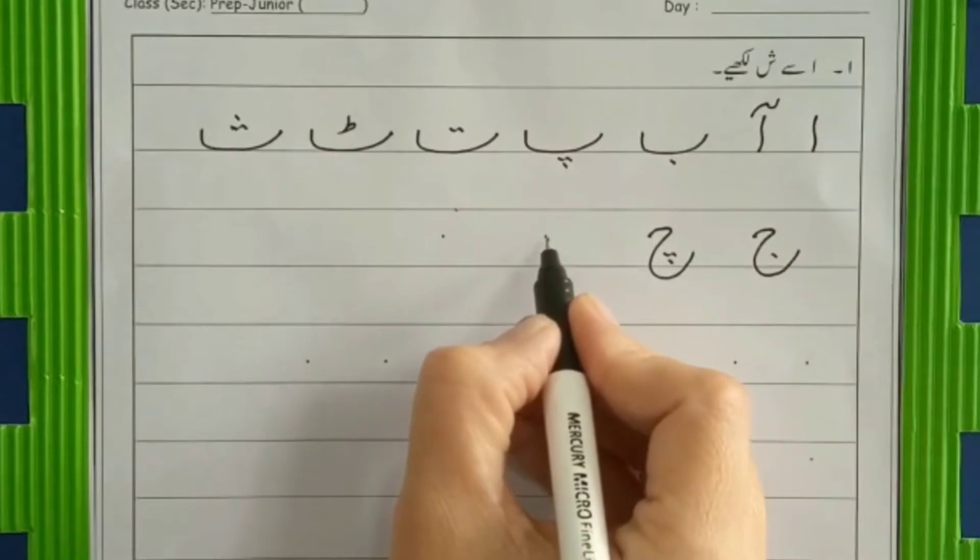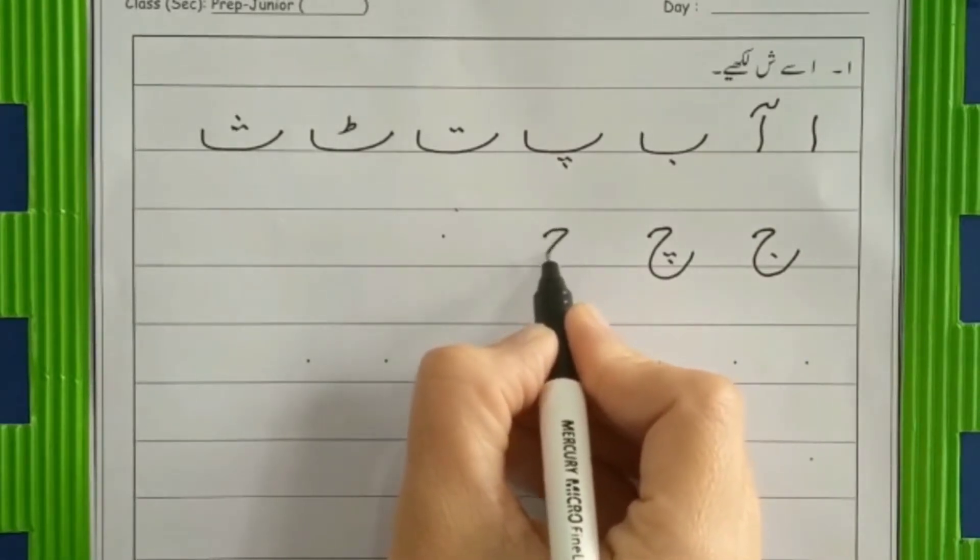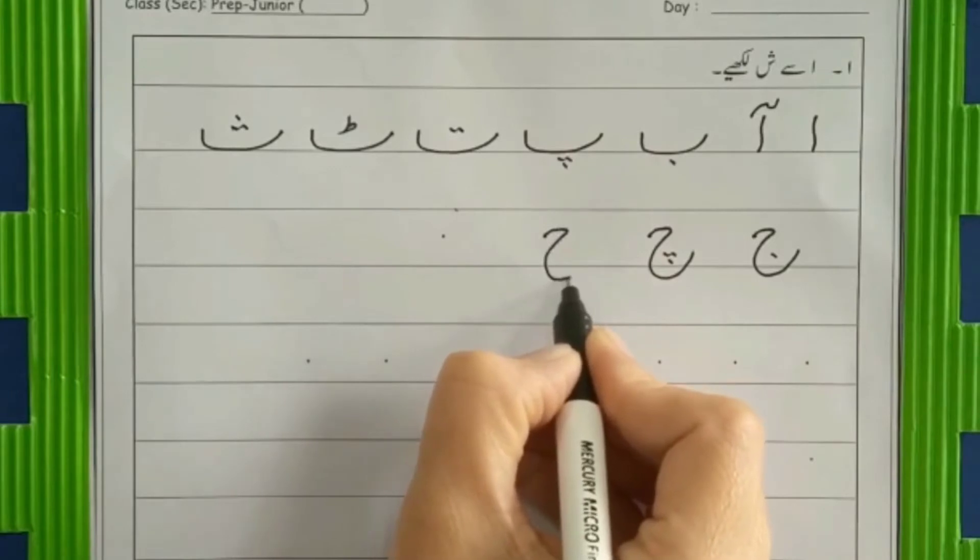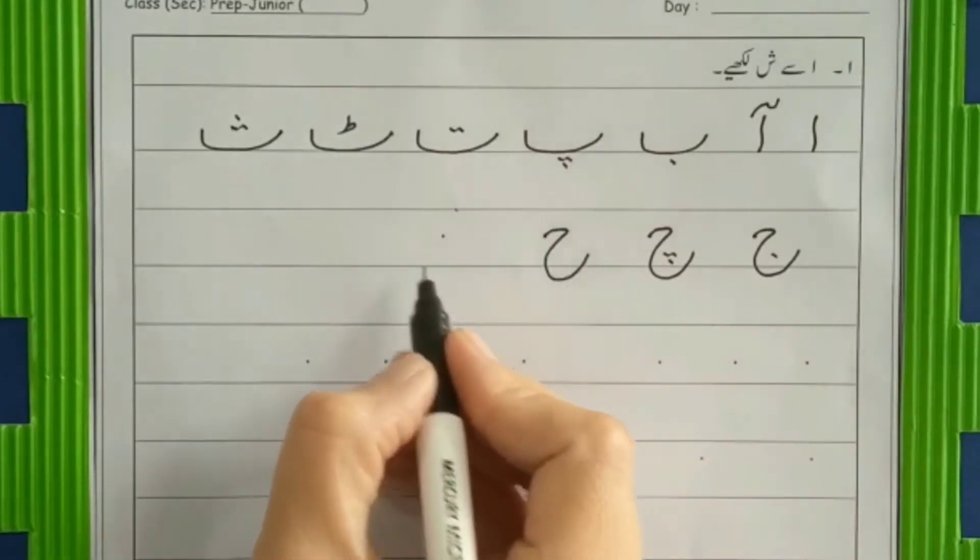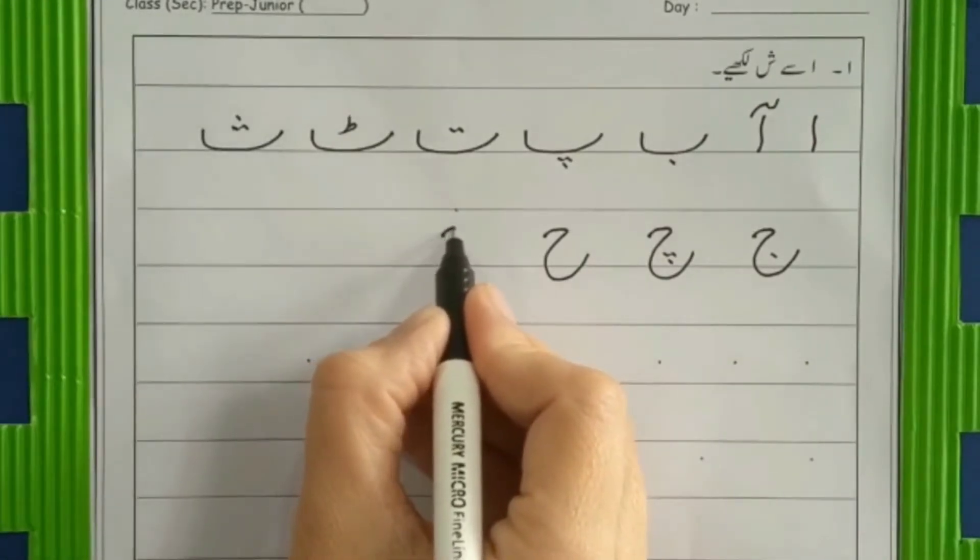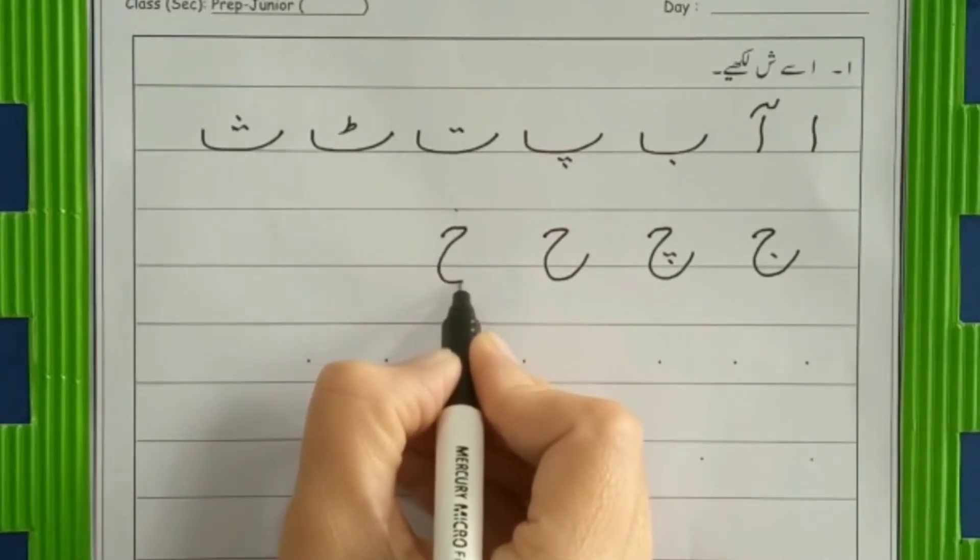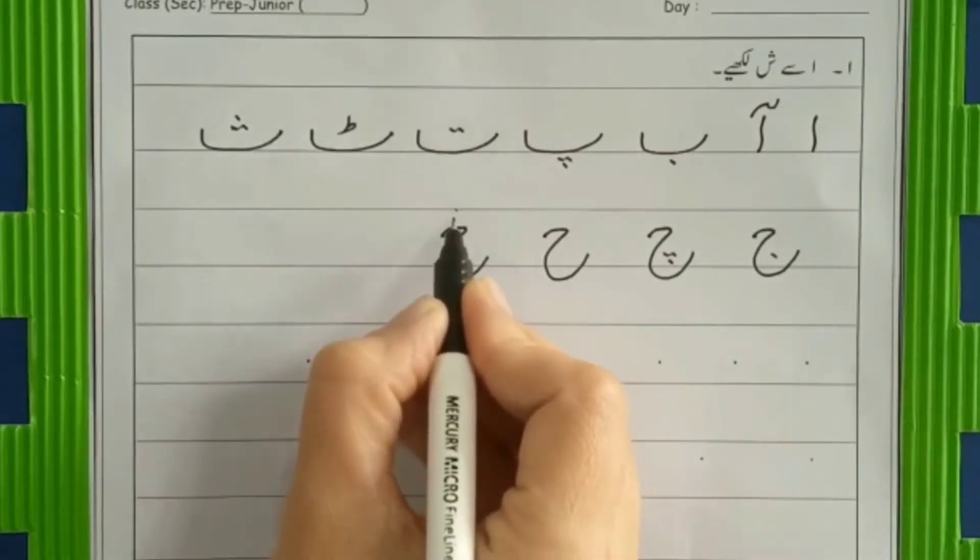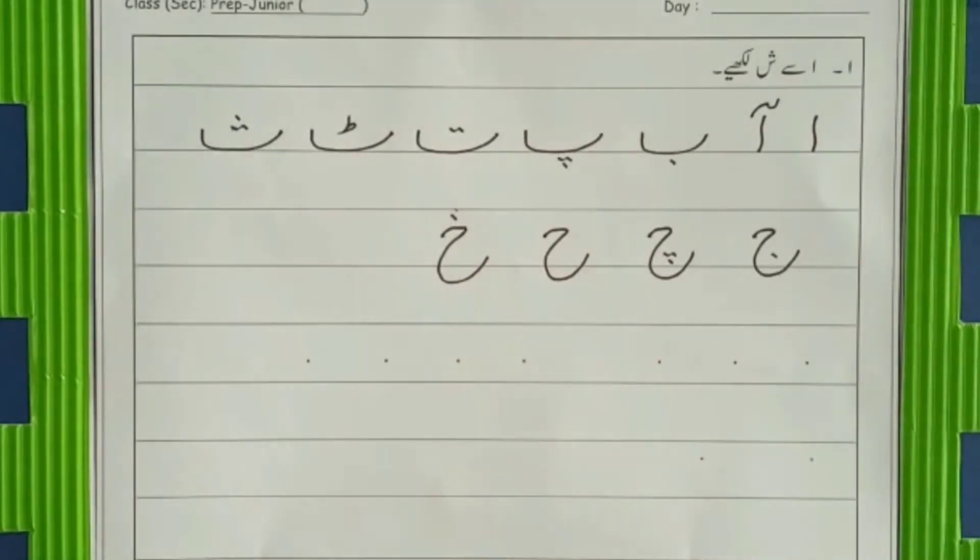Jeem, chee, hee. Make a head, say with me, calm down slant, make a belly and four dots. Very right. Now chee, make a head, calm down slant and make a big belly and one dot. Now jeem family is also done.